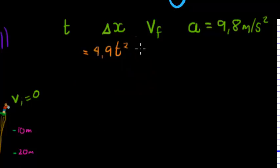Okay, future velocity. We can use the formula initial velocity plus acceleration times delta t. Initial velocity being zero, acceleration being 9.8 delta t.